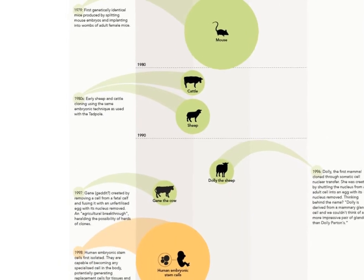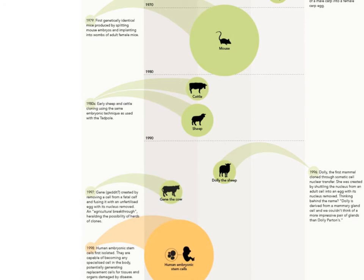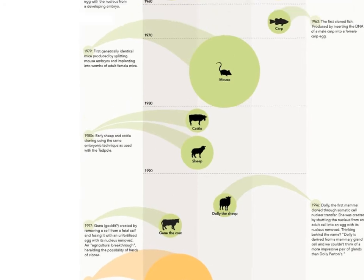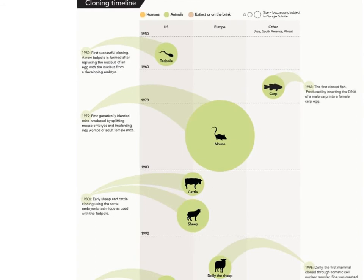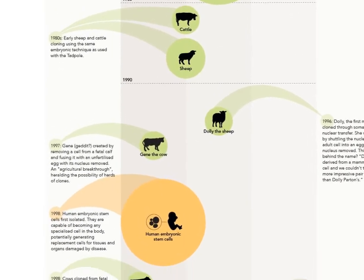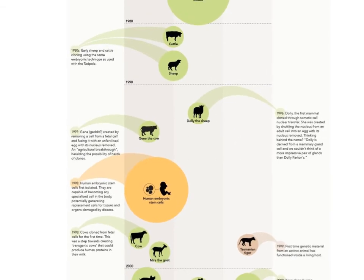In the 1980s, sheep and cattle were cloned using the same technique as with the tadpole: taking an embryo, removing its nucleus, and putting it into an enucleated egg. The big milestone when I was growing up was Dolly the sheep, which appeared on the cover of Time magazine. Dolly was the first time somatic cell nuclear transfer was used on a mammal, and the implication was: if you can do it with mammals, you can do it with humans.